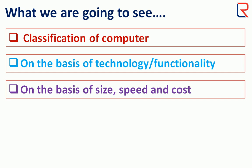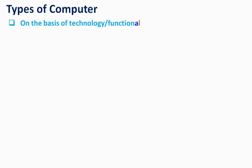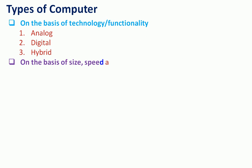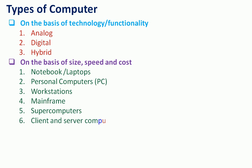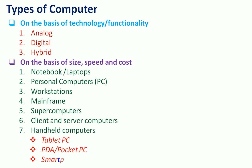On the basis of size, speed, and cost. On the basis of technology and functionality, we have three types: analog computer, digital computer, and hybrid computer. On the basis of size, speed, and cost, we have notebook and laptop computers, personal computers, workstations, mainframe computers, supercomputers, client and server computers, and handheld computers.